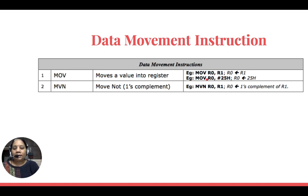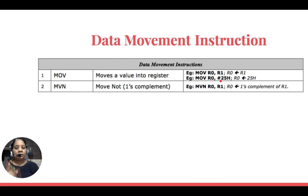In immediate addressing mode, the data attached must be only an 8-bit value — you cannot have 32-bit immediate data here. Since the register R0 is 32 bits but you are loading only 8 bits, the value will be zero-extended to 32 bits and stored in R0 — for example, 0x00000019 for the value 25.